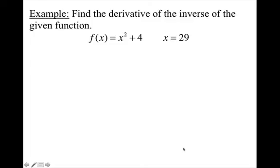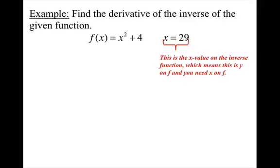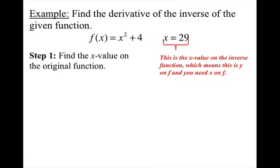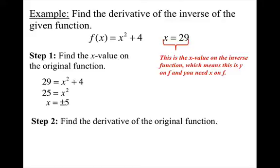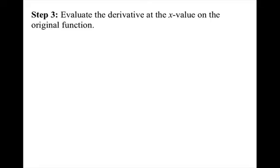Find the derivative of the inverse of the given function. The x value given is the x value on the inverse function, which means it's the y value on f — you need the x value on f. Step 1: find the x value on the original function by setting the inverse's x value equal to the function and solving for x, giving x = ±5. Step 2: find the derivative of the original function, which gives 2x. Step 3: evaluate the derivative at the x values — plugging in 5 gives 10.